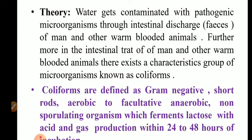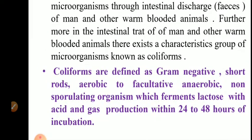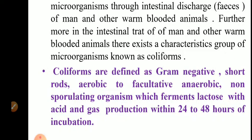So the first important organism checked is the coliform. What are coliforms? Coliforms are gram-negative short rods which are aerobic to facultatively anaerobic bacteria, which are non-spore-forming and they ferment lactose sugar with acid and gas within 24 to 48 hours of incubation. So coliforms are: number one gram-negative, number two short rods, number three facultatively anaerobic, number four non-spore-forming, and most importantly they ferment lactose sugar with acid and gas within 24 to 48 hours of incubation at 35 to 37 degrees Celsius.